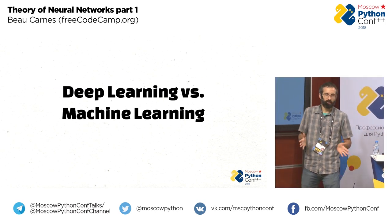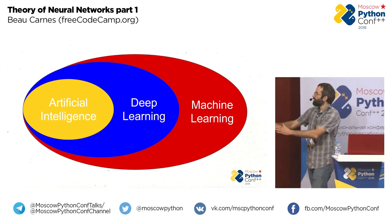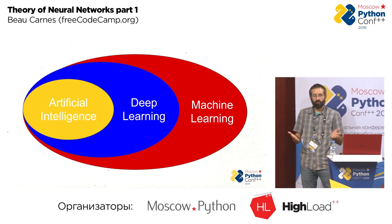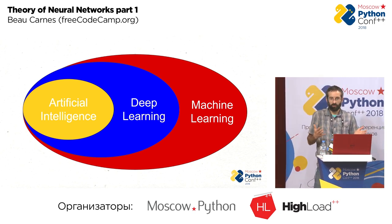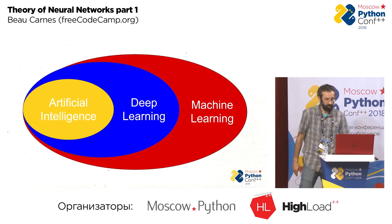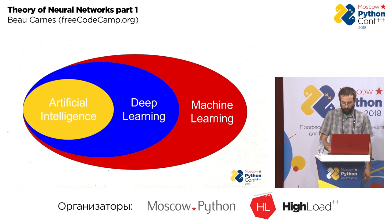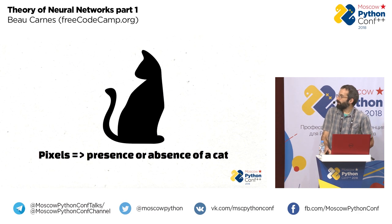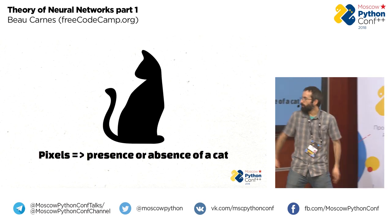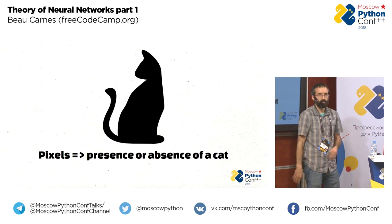Deep learning versus machine learning — deep learning is actually a subset of machine learning. Machine learning is kind of what it sounds like: machines or computers are trying to learn something they were not explicitly programmed for. Machines observe a pattern and attempt to imitate it in some way. Machine learning is often attempting to take an input data set and transform it into an output data set. For example, if you have pictures of a cat, the input is pixels and the output would be a presence or absence of a cat.